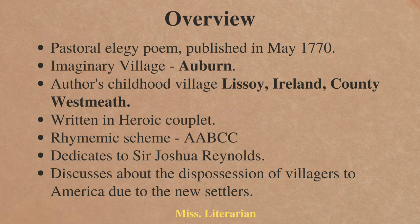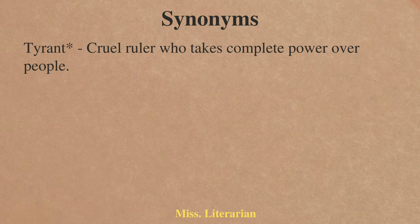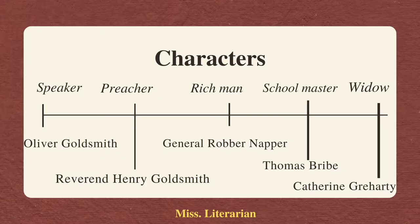After many years, Goldsmith is revisiting the village and bringing us the changes he experiences. The rich man, projected as a tyrant, represents General Robert Napier. This man collects many lands from the village farmers for low cost and brings many industries to the village. As days pass, those industries pollute the village.